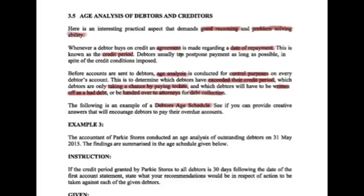Before accounts are sent to debtors, an age analysis is conducted for good control purposes on every debtor's account. This is to determine which debtors have exceeded their credit period, which debtors are only taking a chance by paying too late, and which debtors will have to be written off as a bad debt or handed over to attorneys for debt collection.